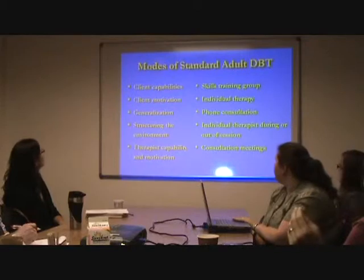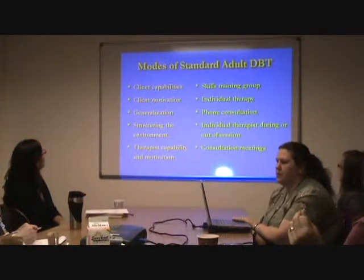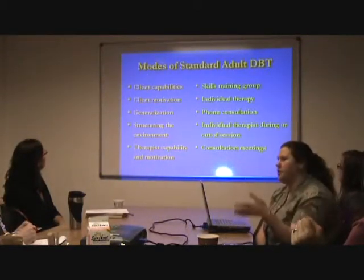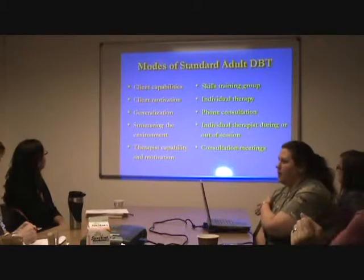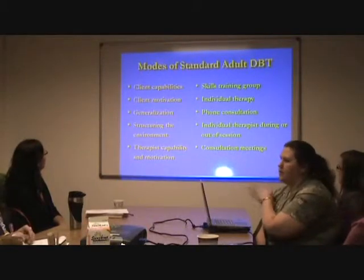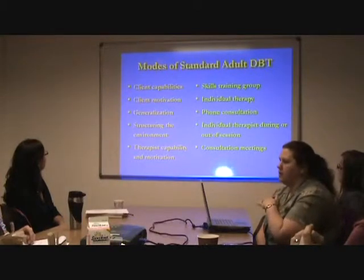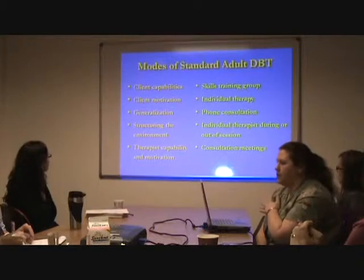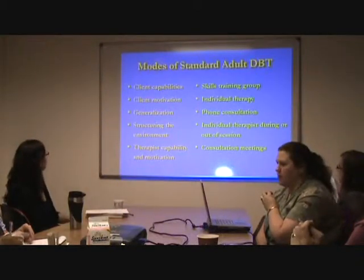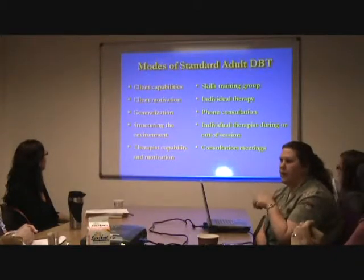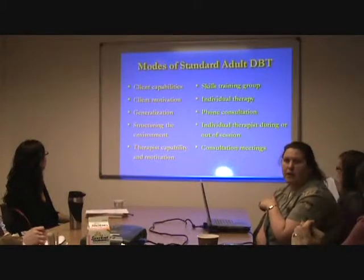Let me give you some examples. This is standard adult DBT. The functions are on the left and the modes are on the right. In a standard DBT program, client capabilities are treated with the skills training group, motivation is treated with individual therapy, generalization with phone consultation, structuring the environment is the individual therapist during or out of session, and therapist capability and motivation through the consultation team.